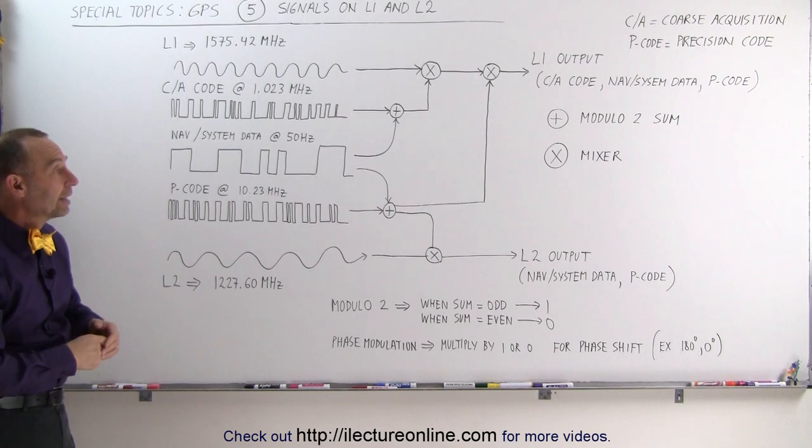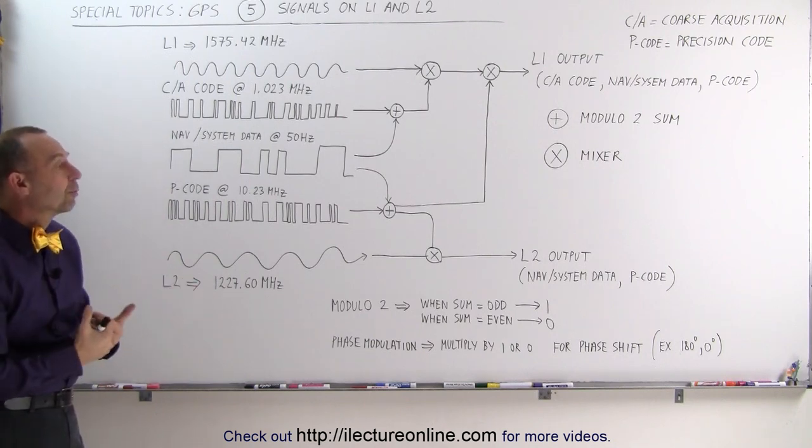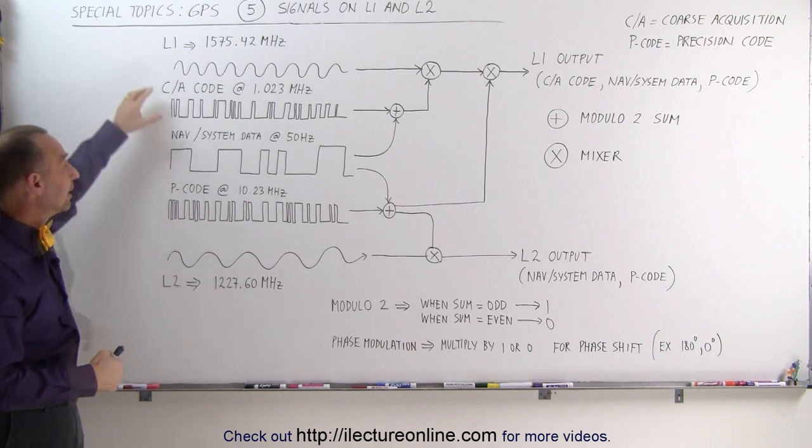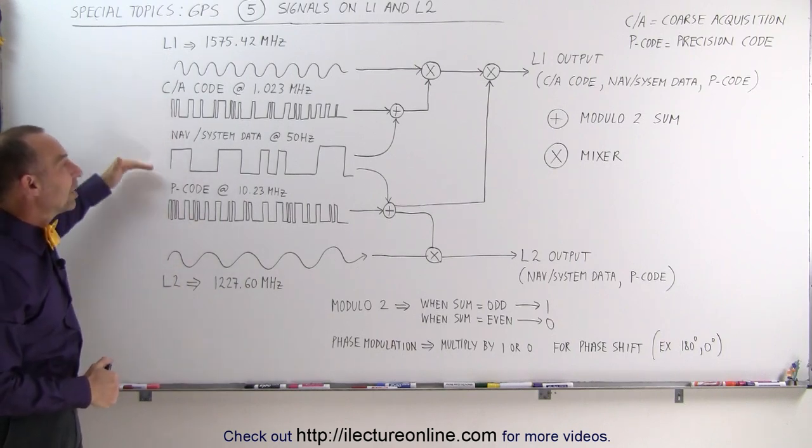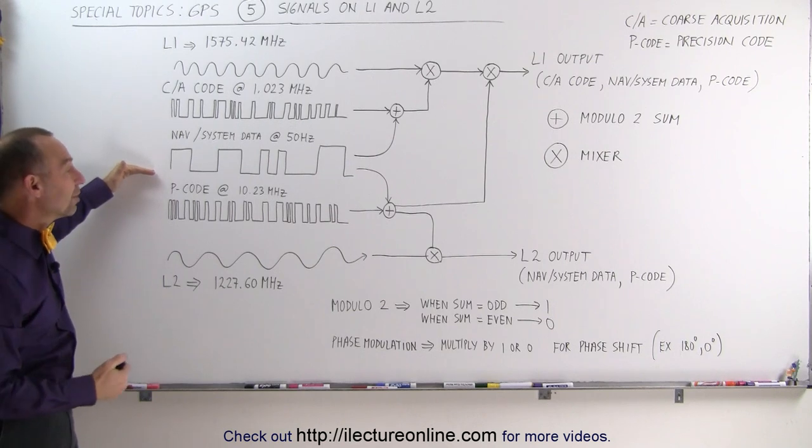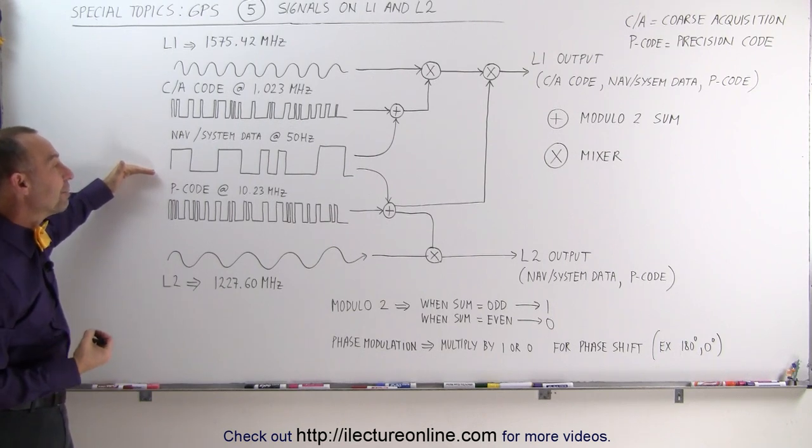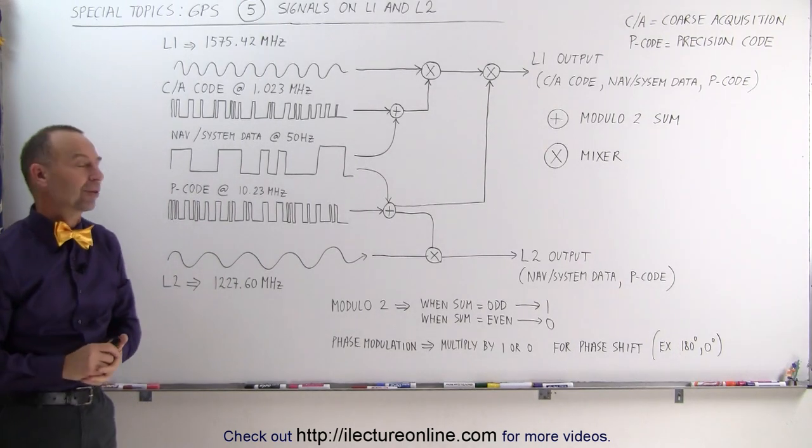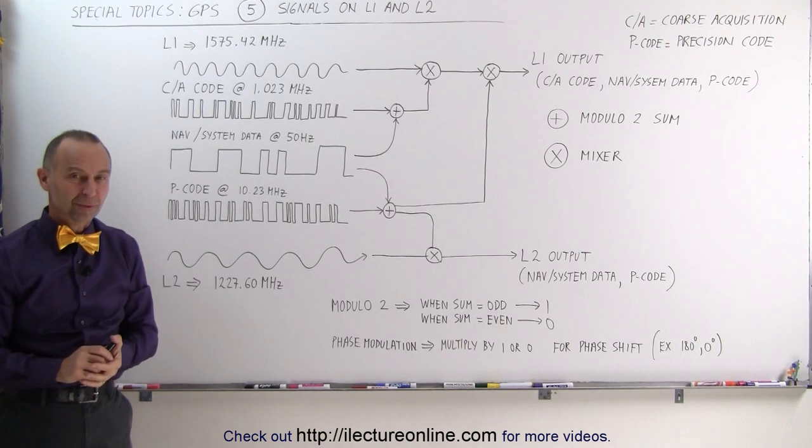That's the basic structure of how the data gets out on the GPS satellites, and how the receiver receives it. So, when the receiver receives both the L1 and the L2 channels, they can then take the signal, and through the electronics and the receiver, pull the information back out, knowing how the information was put on top of the carrier signal. And that's how it's done.